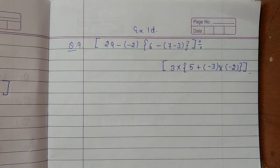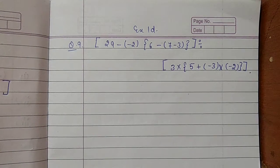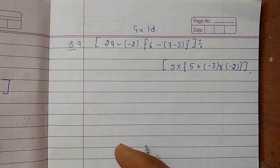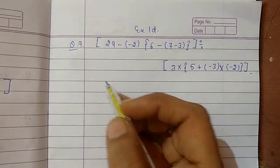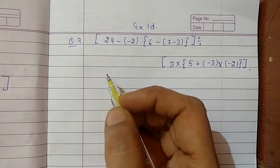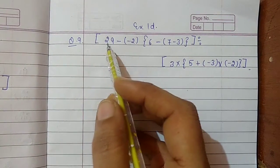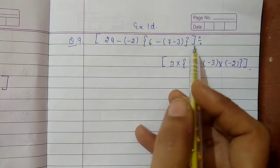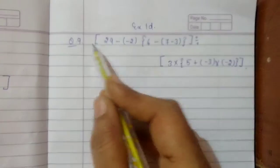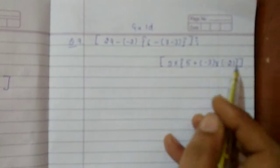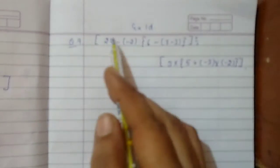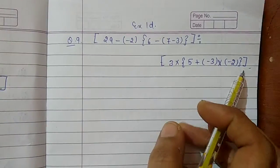One more doubt is there regarding question number 9, so now I am solving this. You can see the bracket is there — one complete bracket is there from there to there, and one there. Both the brackets are separate.